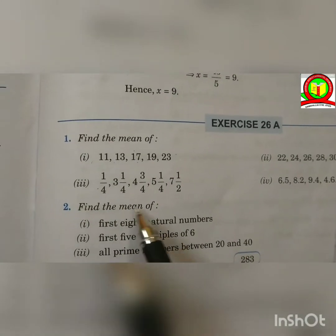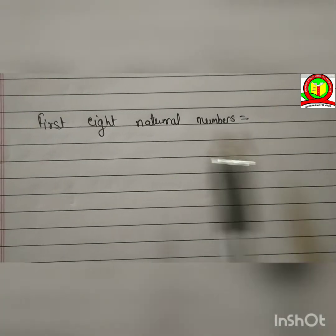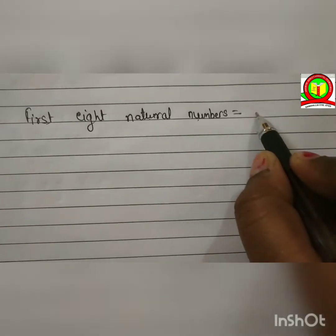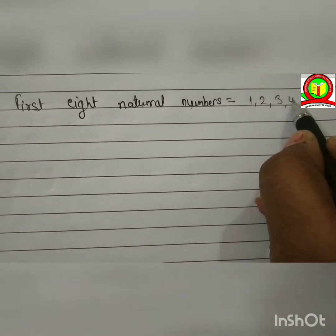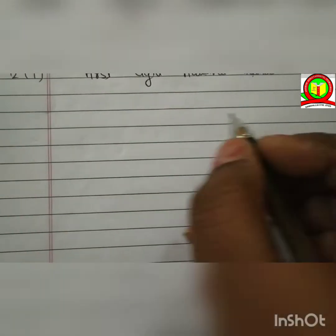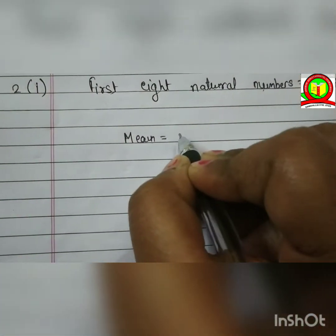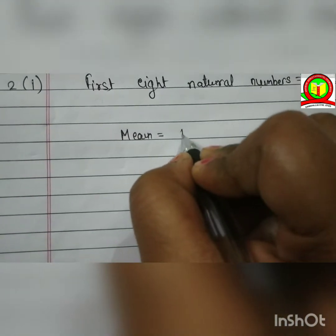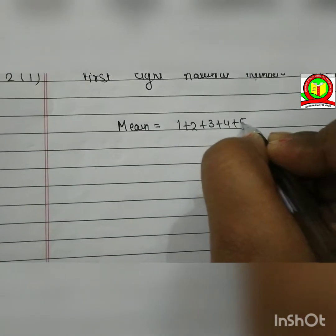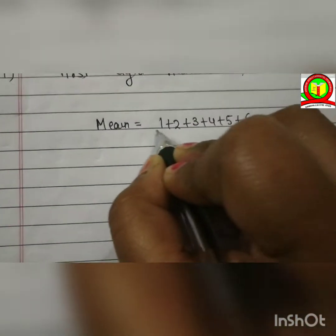Now, second question is find the mean of first eight natural numbers. So, first eight natural numbers is equal to 1, 2, 3, 4, 5, 6, 7 and 8. Now, the mean is equal to sum of observation. So, observation is 1 plus 2 plus 3 plus 4 plus 5 plus 6 plus 7 plus 8.